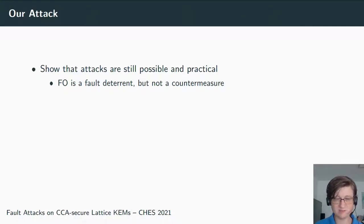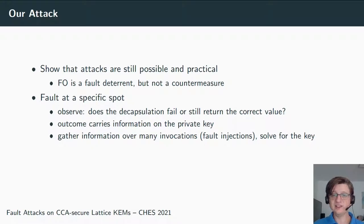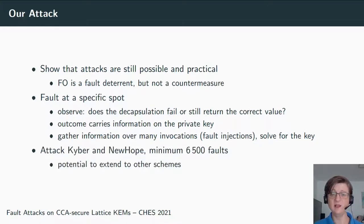So the question is, can we still do attacks on such schemes even with this kind of inherent fault protection in place? The answer, as you may have guessed from the title of the talk, is yes, because we show that attacks are still possible and practical. The Fujisaki-Okamoto transform is a fault deterrent—it might make faults harder—but it's not a countermeasure as such. Our attack works as follows: we introduce a fault at a specific spot, then we observe, does the decapsulation fail or does it still return the correct value? This is kind of like a safe-error attack.